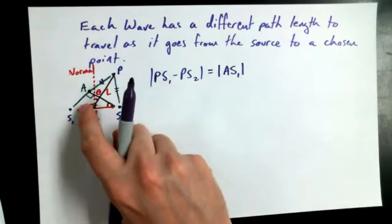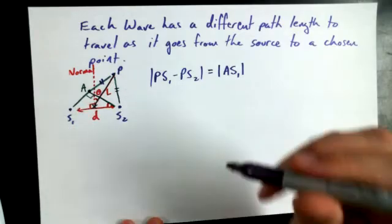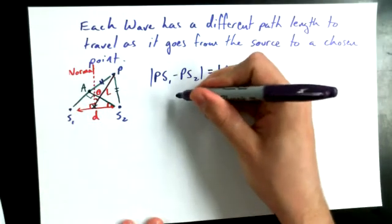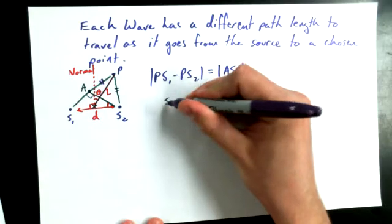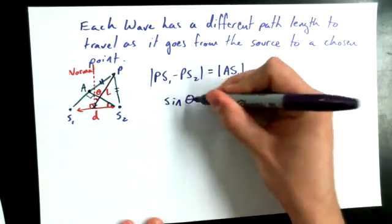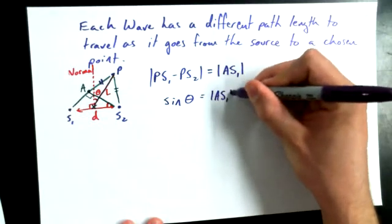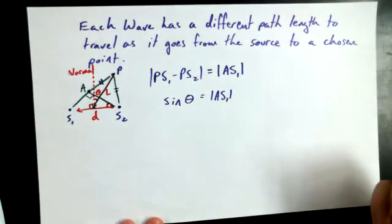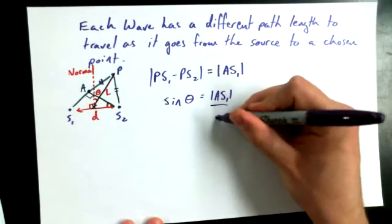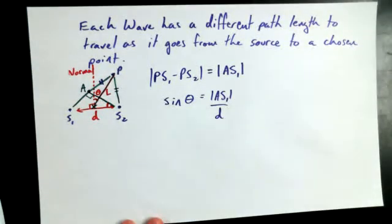Now, I'd like to take a look at the second triangle and I'd like to say, hey, look, using sine ratios, I could say that sine of theta is equal to absolute value of AS1, that's the length of the line segment AS1 divided by D. Opposite over hypotenuse. Because that theta there and that theta there are going to be the same theta.